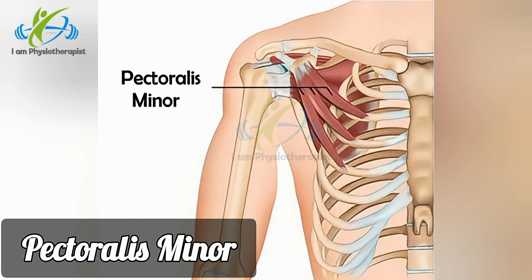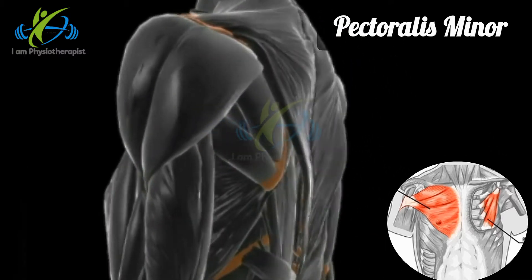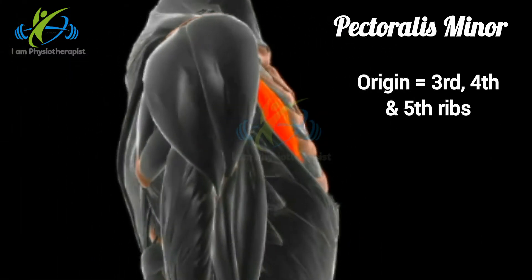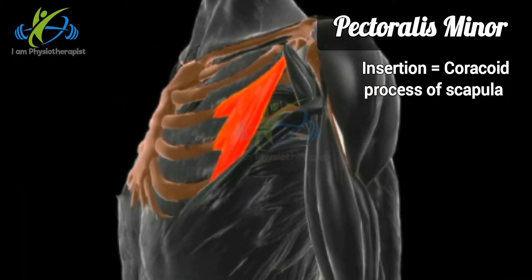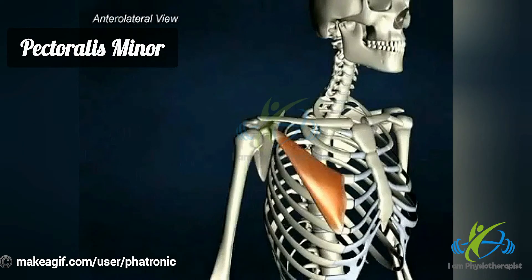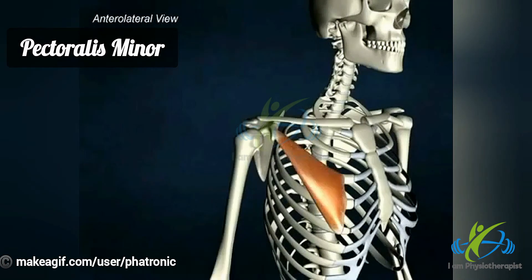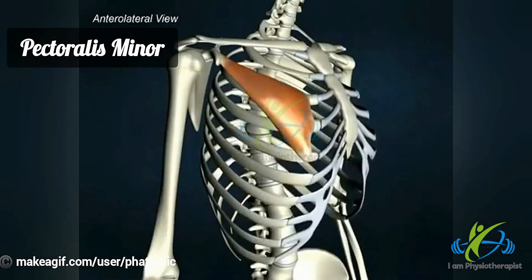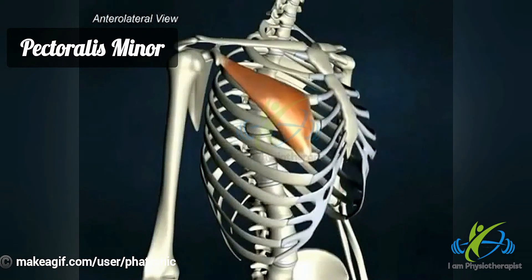Pectoralis Minor. The pectoralis minor muscle lies under the pectoralis major. It originates from the third, fourth, and fifth ribs, and inserts into the coracoid process of the scapula. Its actions include stabilisation of the scapula by drawing it anteroinferiorly. Its other major function is to help in elevation of the ribcage during inhalation, allowing for full deep breathing.